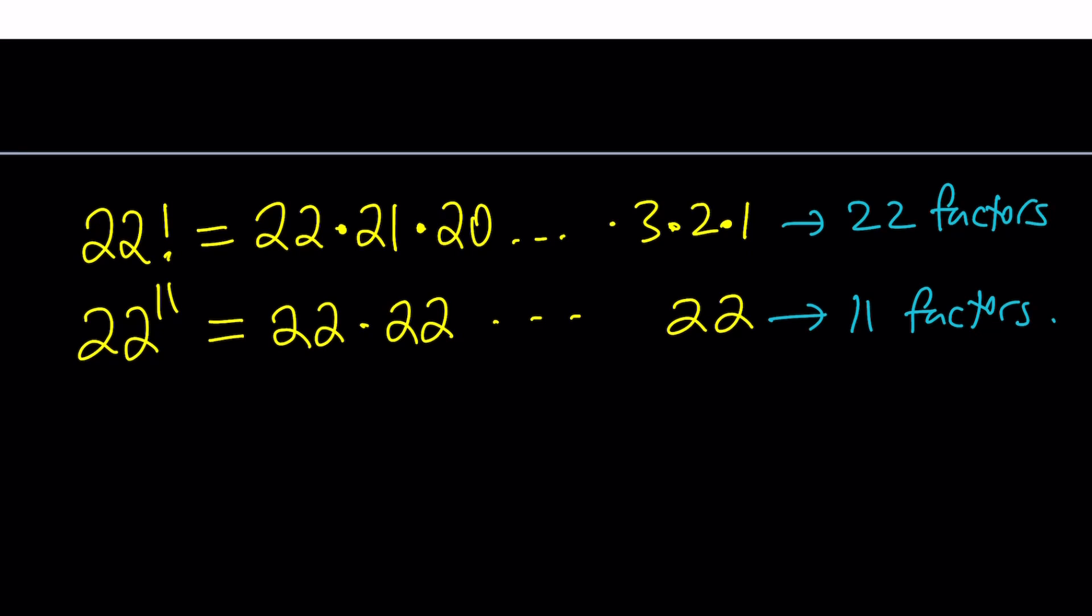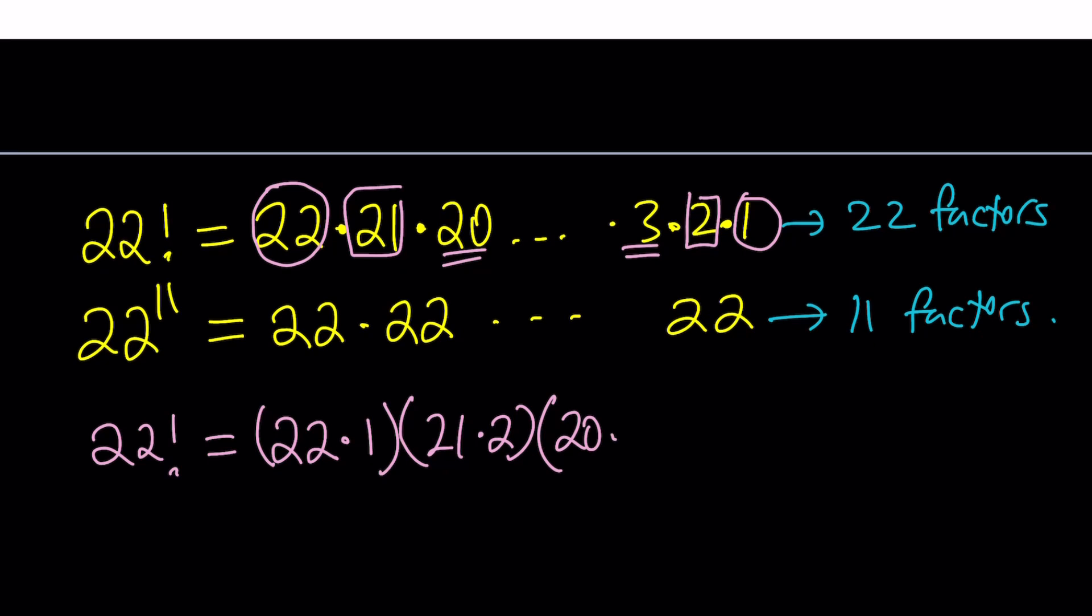So I'm going to go ahead and pair 22 with 1. So now I can write 22 factorial as 22 times 1. And then the next group is going to include 21 and 2, 21 and 2. And then the next one is going to be 20 and 3. And notice that in each group, we have two numbers that are being multiplied and they add up to 23. That's a good way to check if we're doing the right thing.